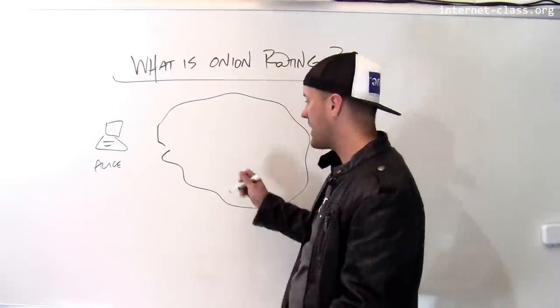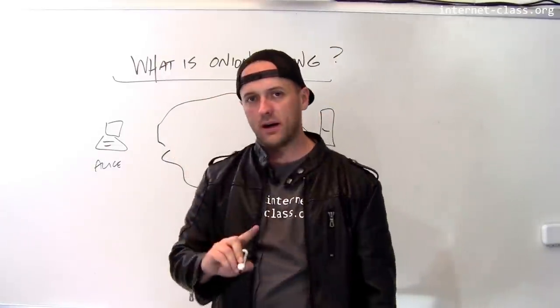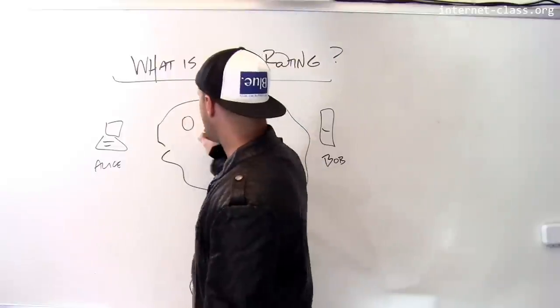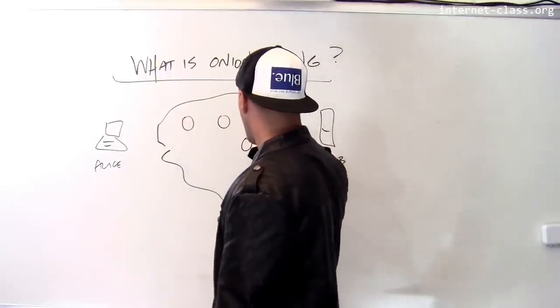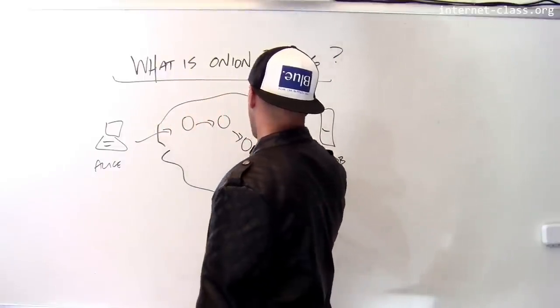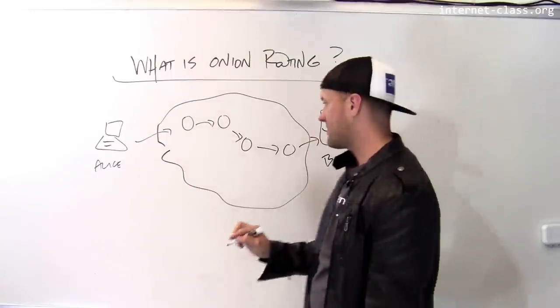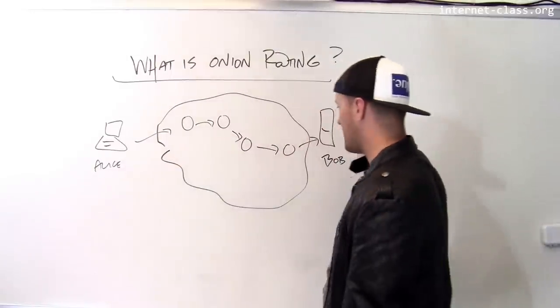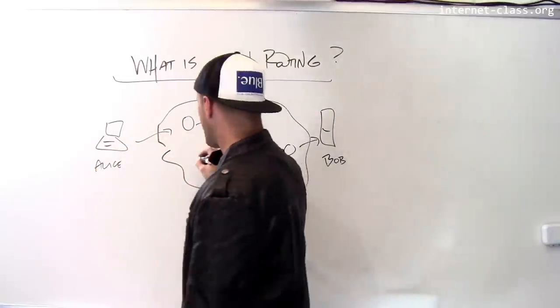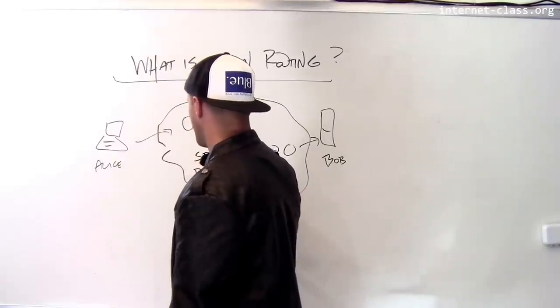What's the problem with traditional routing? In order for Alice to send a message to Bob or for Bob to send a message back to her, the fundamental nature of the IP protocol requires that all of the routers on this path see IP packets that are either destined for Bob from Alice or for Alice from Bob. All of these routers see both the source and the destination.